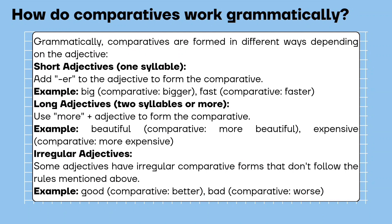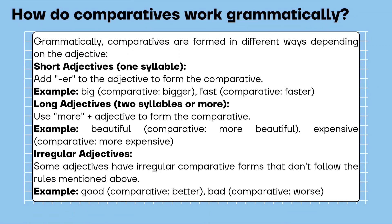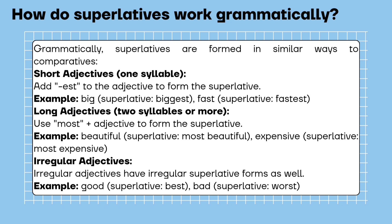Long adjectives, two syllables or more: use more plus the adjective to form the comparative. Example: beautiful — comparative: more beautiful. Expensive — comparative: more expensive. Irregular adjectives: some adjectives have irregular comparative forms that don't follow the rules mentioned above. Example: good — comparative: better. Bad — comparative: worse.